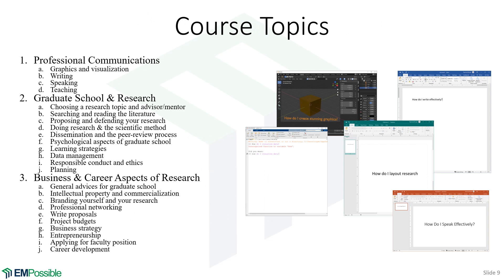This course is roughly divided into three parts. The first part, professional communications, will be about 40% of the course — covering graphics and visualization, writing, speaking, and even teaching, since many of you may become research assistants. The second part is graduate school and research, the core of what's typical in this course: how to choose a topic, how to choose an advisor or mentor, how to read the literature, your research proposal, and psychological aspects like depression and anxiety. The third part covers business and career aspects — advice for when you're looking for a job after your degree. That'll be maybe the last 10% of the course.